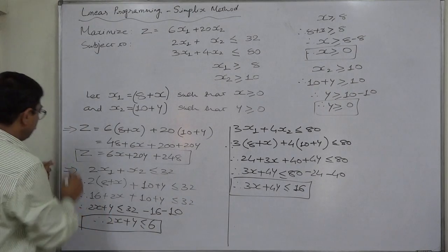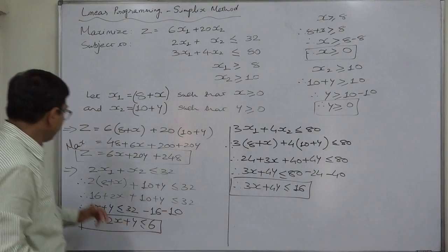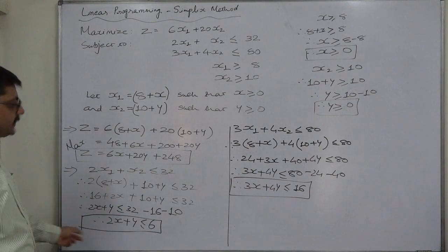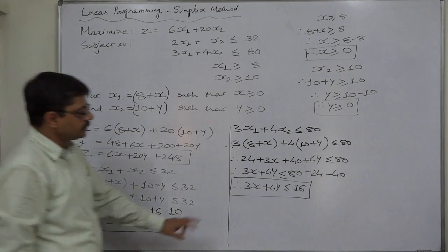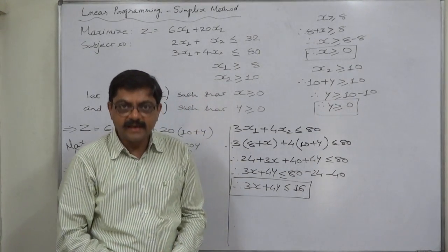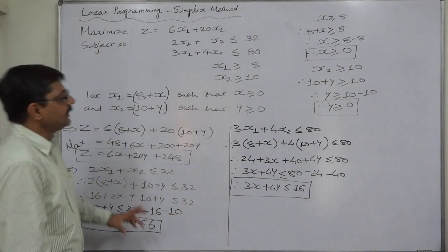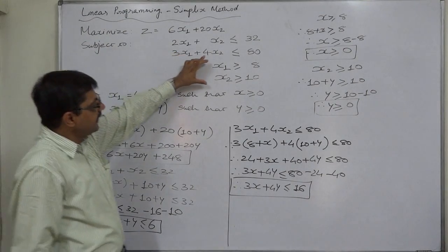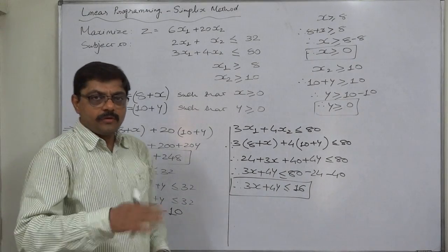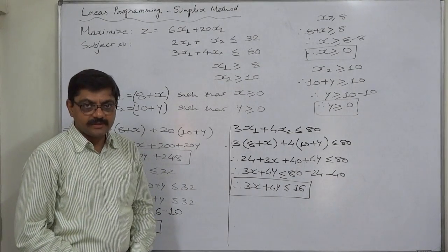So our revised linear programming problem is: maximize z = 6x + 20y + 248, subject to 2x + y ≤ 6, 3x + 4y ≤ 16, and x, y ≥ 0. In this way we can simplify a maximization problem that has constraints with a single variable and a greater-than-or-equal-to sign. From the next lecture we are going to solve this problem by the simplex method. Thank you very much.